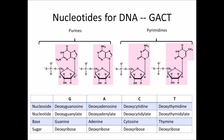The way the carbons are numbered: one prime, two prime, three prime, four prime, five prime. The reason they have prime in the name is because without the prime it refers to positions in the ring of the base. This is the base, this is the sugar. A nucleoside is made up of a base and a sugar. A nucleotide is made up of a base, a sugar, and a phosphate.